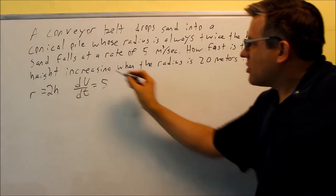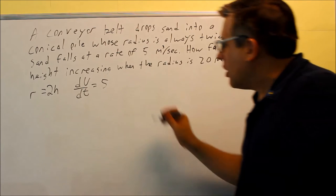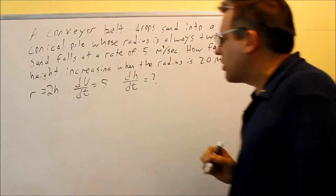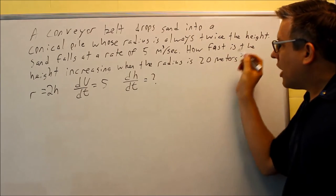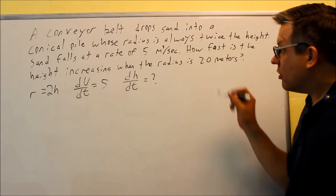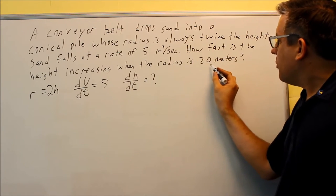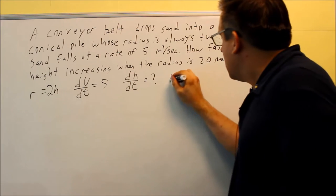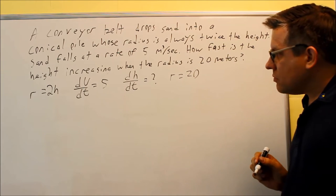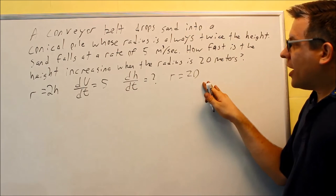How fast is the height increasing? That's dh/dt, and it looks like they're asking us to solve for that one. So how fast is the height increasing when the radius is 20 meters? Let's check our units real quick. Meters and meters, we're okay there. So that means the radius is equal to 20. So this is the information that's been provided.